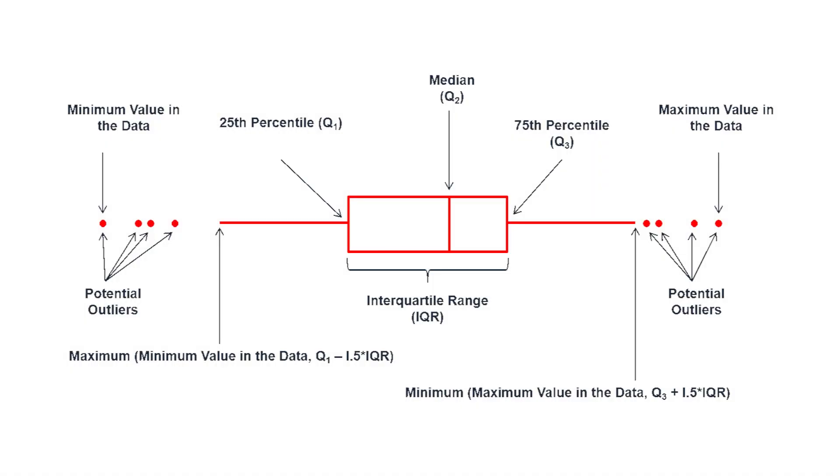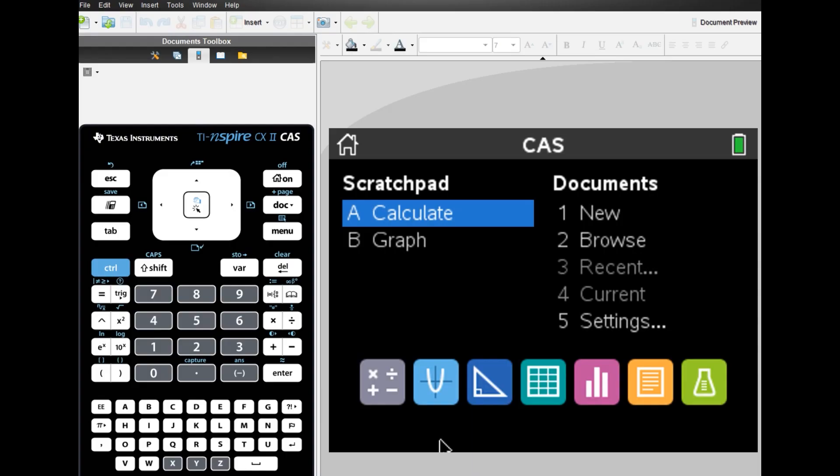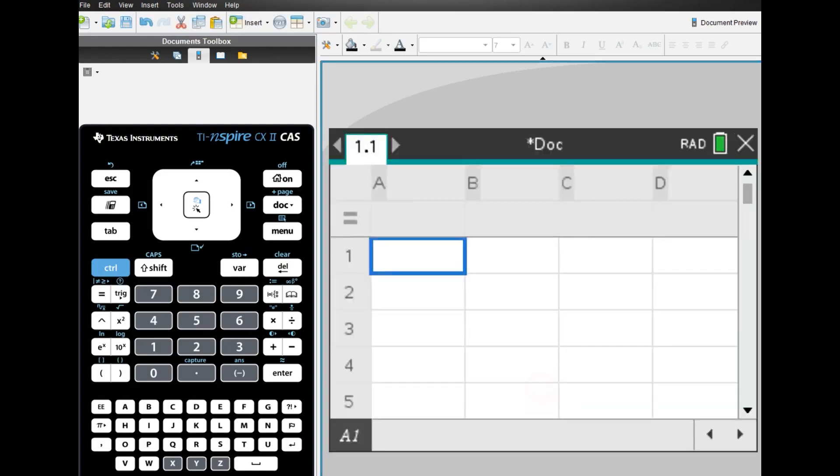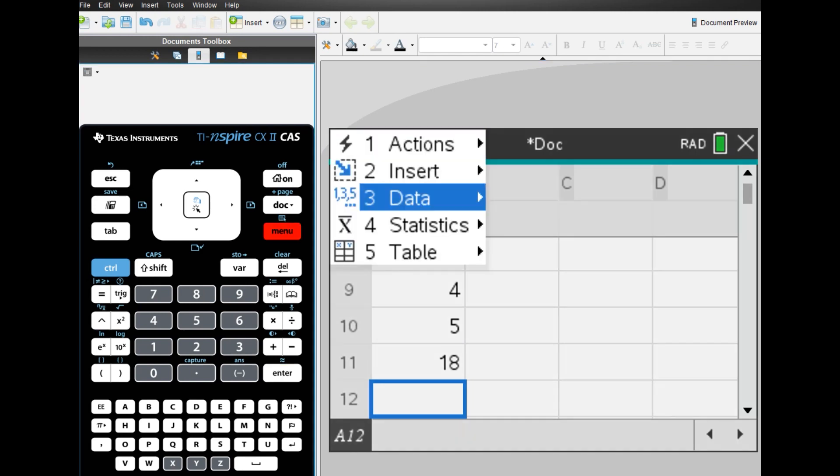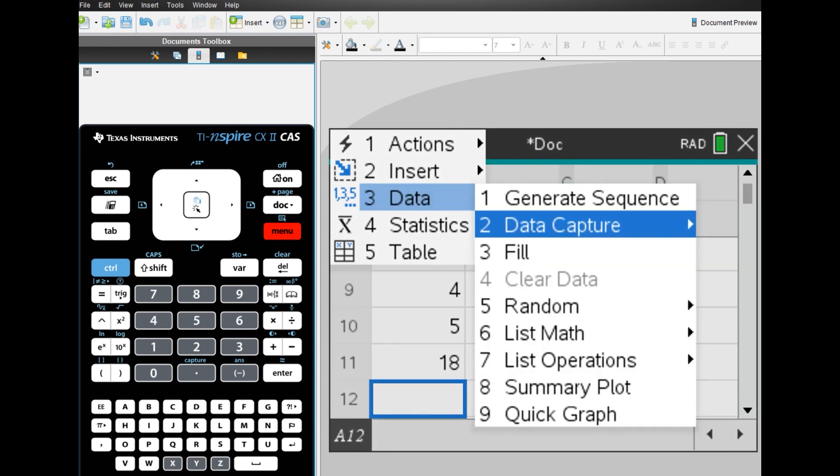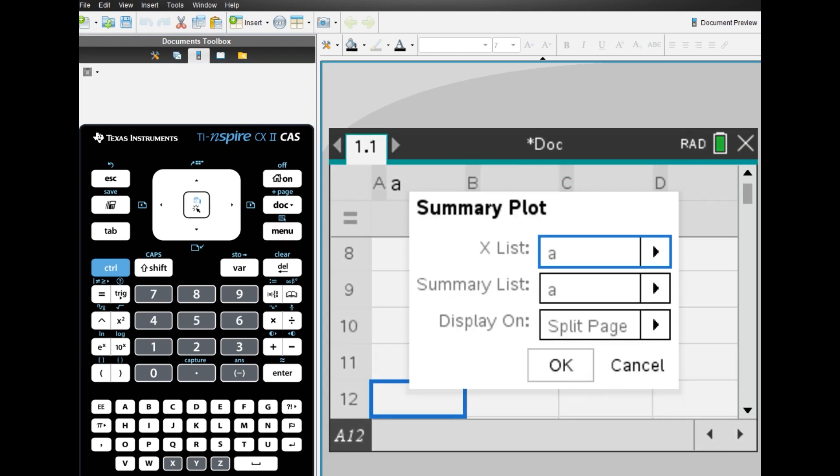Box and whisker plot problems have been appearing frequently, along with questions about outliers. To begin with, select the spreadsheet on the first screen. Let's assume that the data name is a and input random values. As the eleventh value, we'll input a relatively large value of 18 to make it an outlier. Press the menu button and select 3 for data, then select 8 for summary plot on the right. Change the display to new page, then summary plot and press ok.